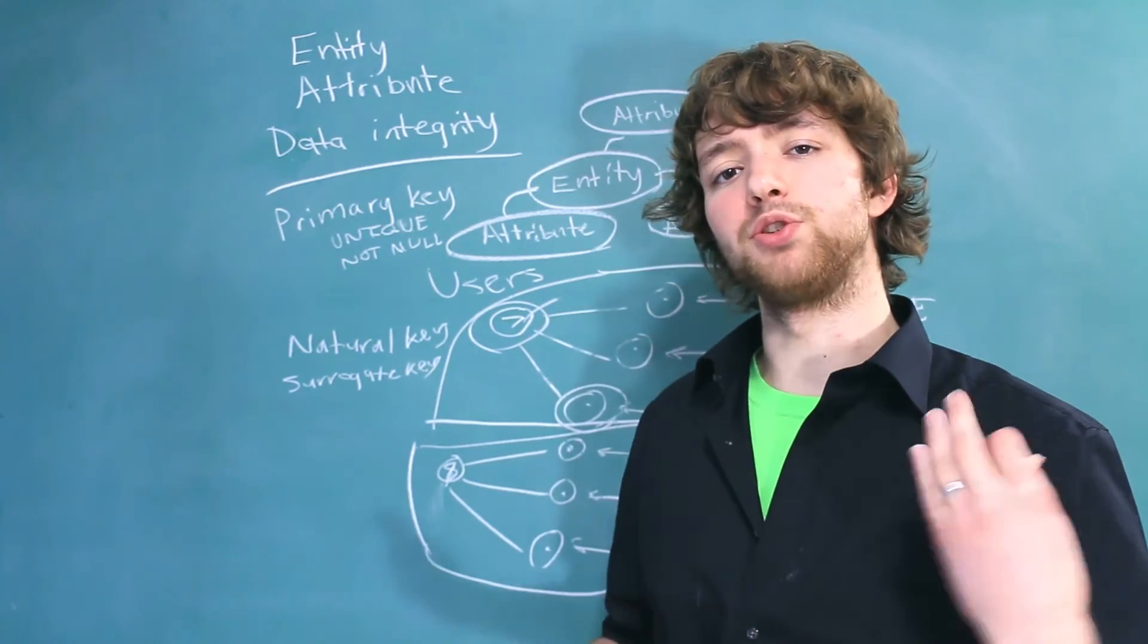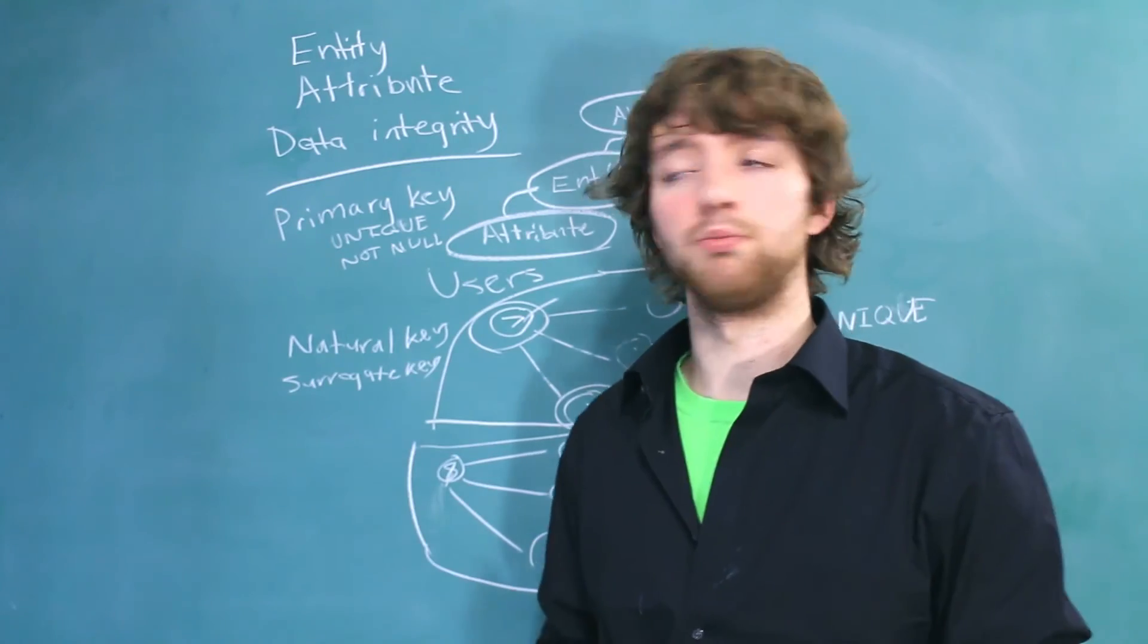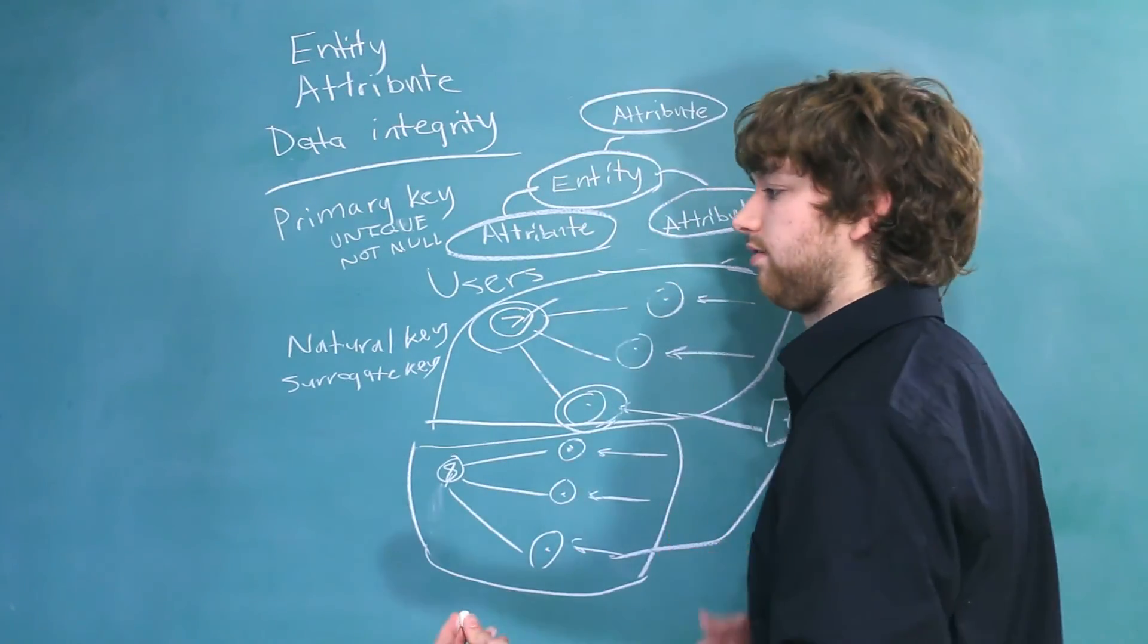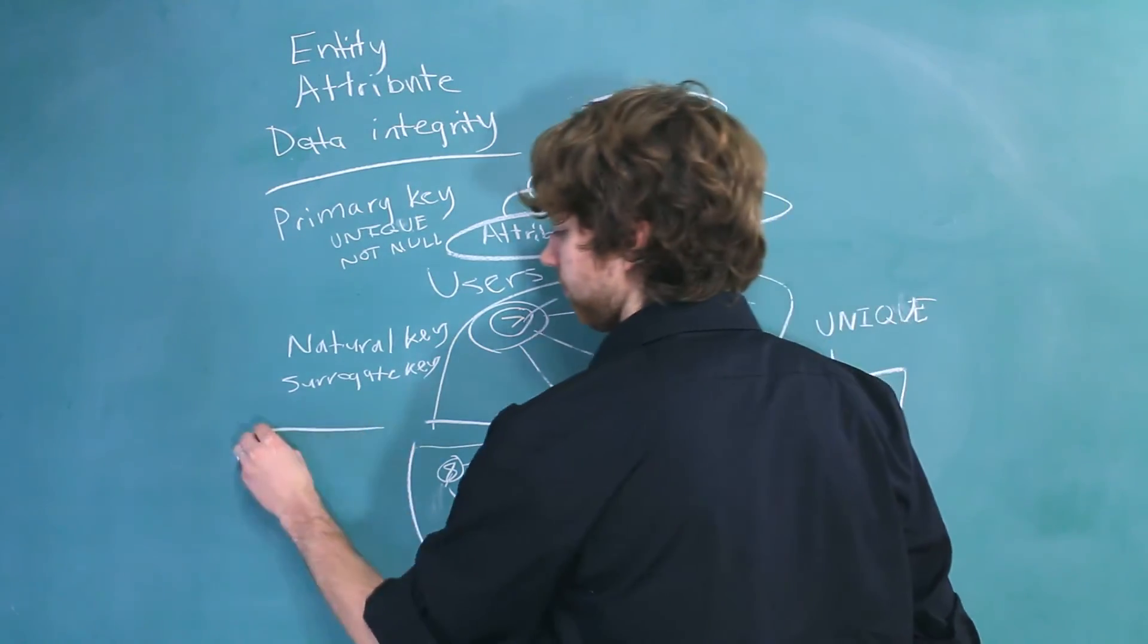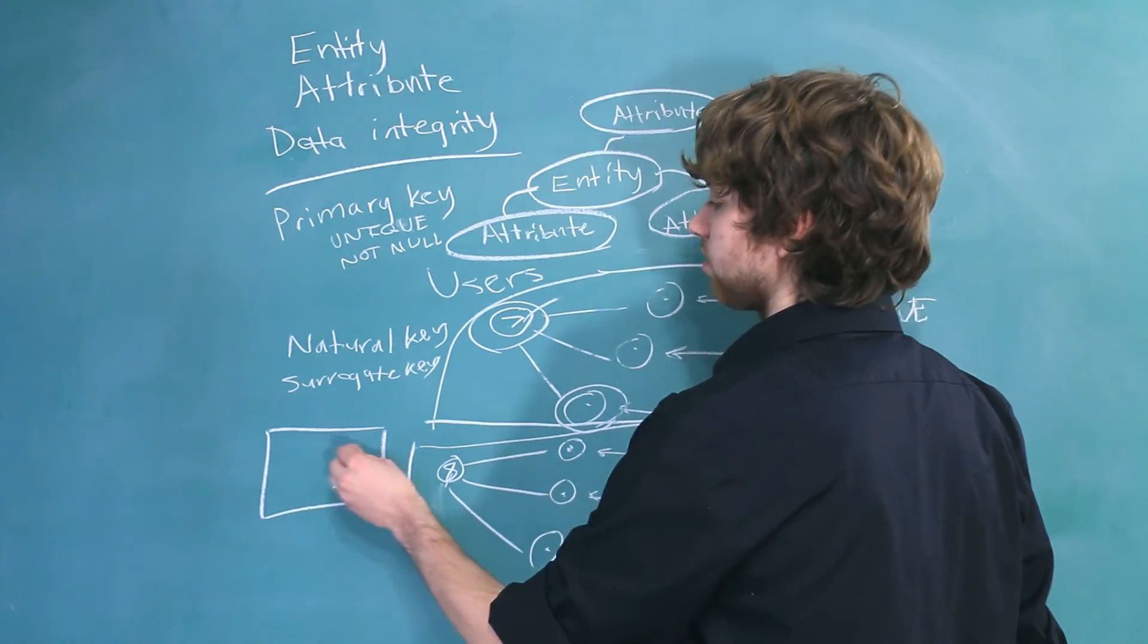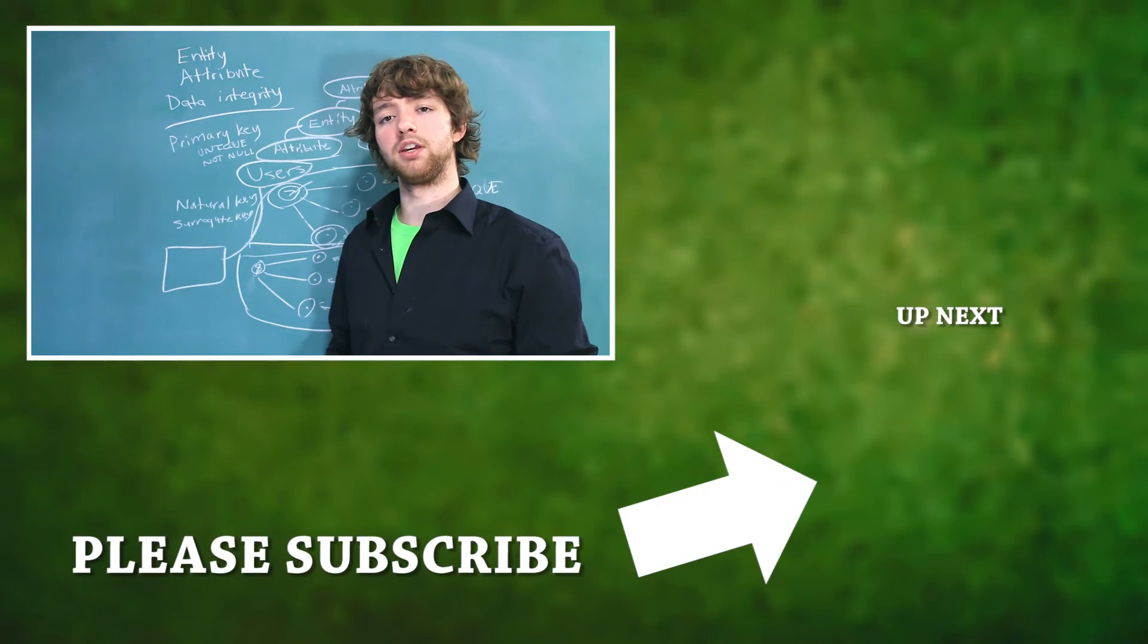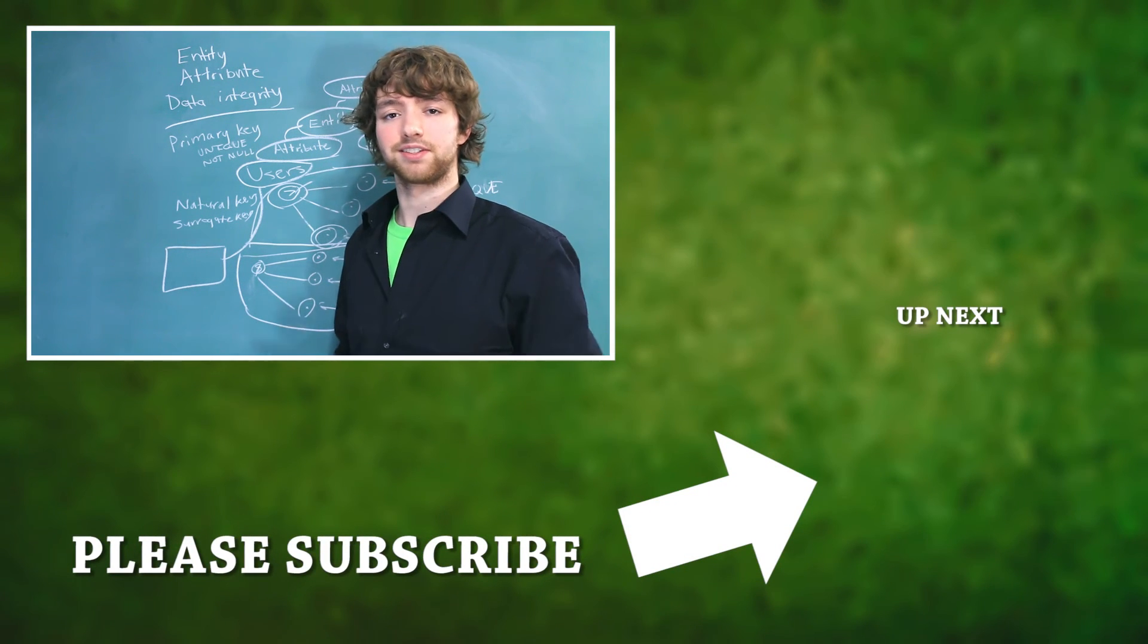Now, what do you do if you want to reference this primary key in another table, or if you want to reference another column? For example, we might have a comment table, and this comment table might reference a user. How do you do that? That introduces the concept of a foreign key, and that's the word we will start with in the next video.